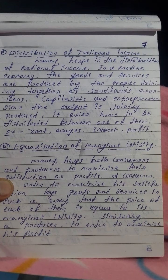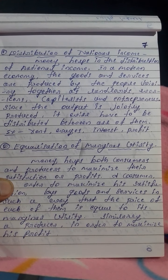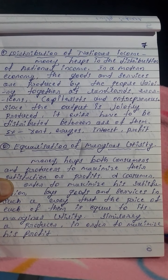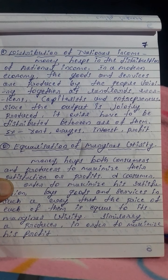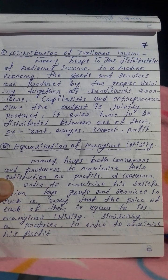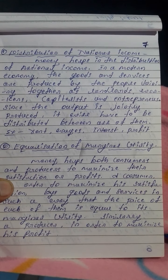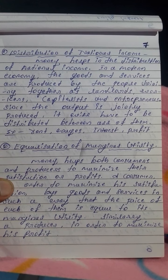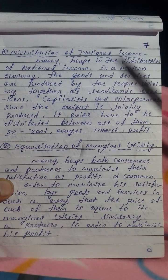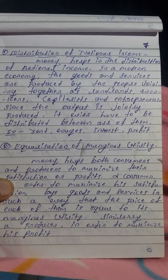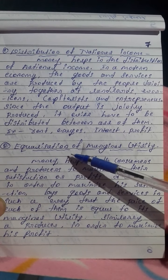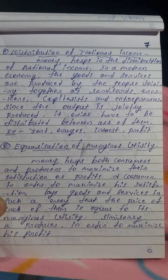For example, if you are a landlord you receive rent; if you are a worker you receive wages; if you deposit money in a bank you receive interest; and if you are a businessman you receive profit. This is how money facilitates the distribution of national income.